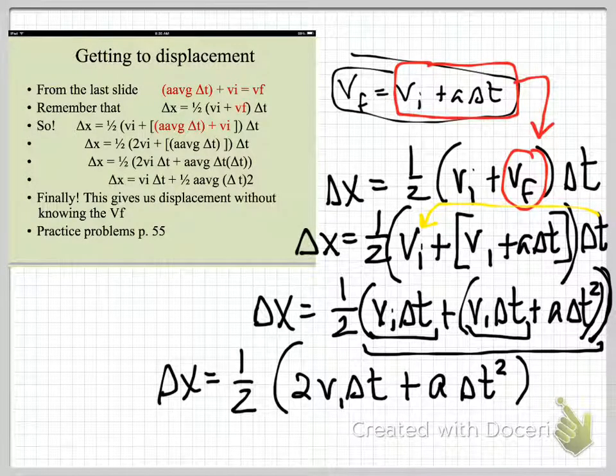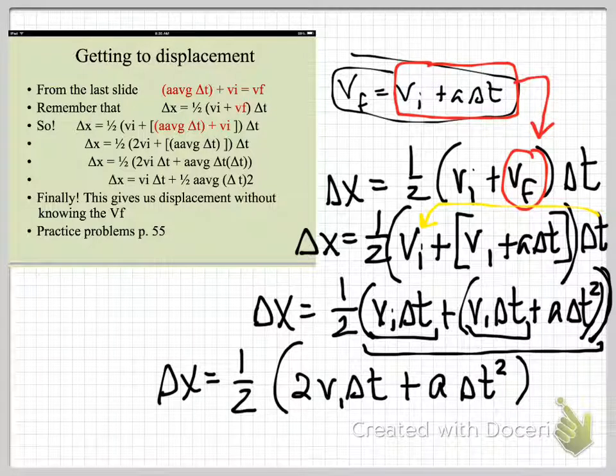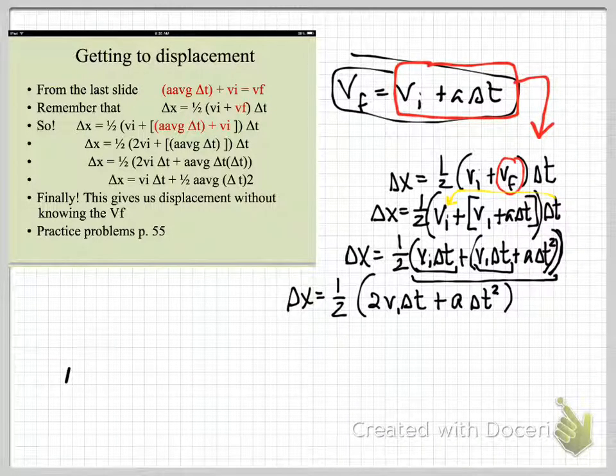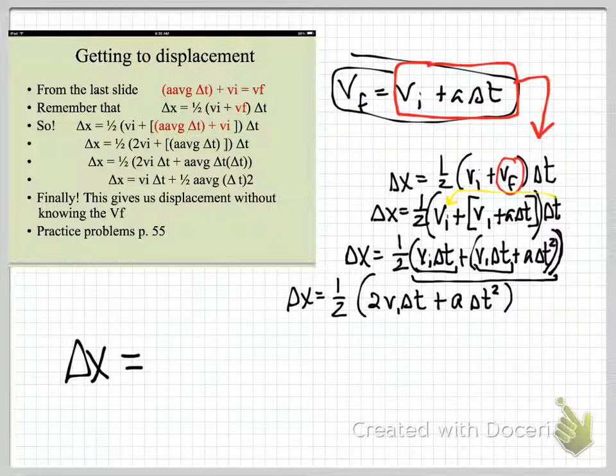Well, delta V is just equal to VF minus VI. Delta T is just equal to TF minus TI. We seldom use those. We can do some substitution. We can say that we'll put this in for that. And we can find VF if we need to. So, we do average acceleration is equal to VF minus VI divided by delta T. We can rearrange this to solve for final velocity. So, A delta T is equal to VF minus VI. And then, A delta T plus VI equals VF.